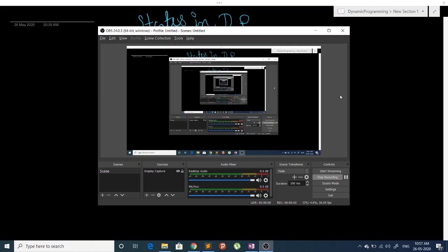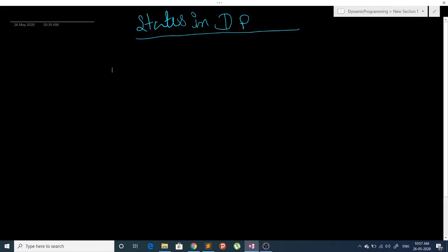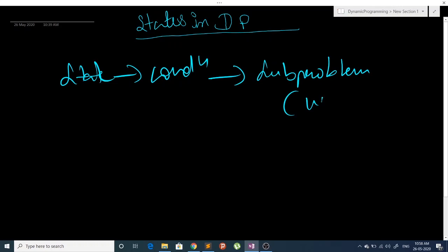Hey guys, in this video we are going to talk about states in DP. So let's get started. First of all, how do we define a state? A state is some condition by which we can define our sub-problem such that we get a unique answer for each sub-problem.